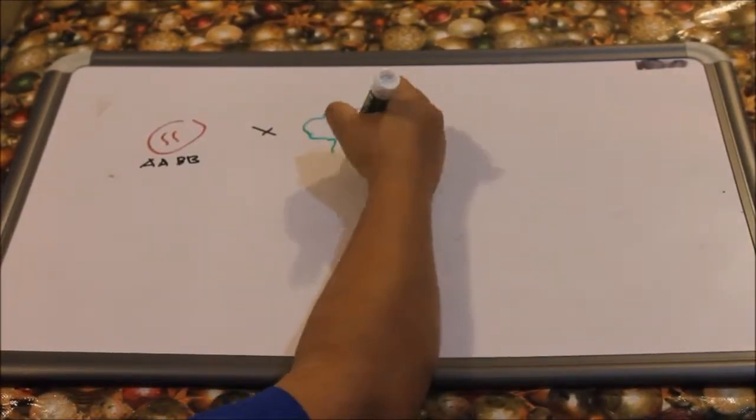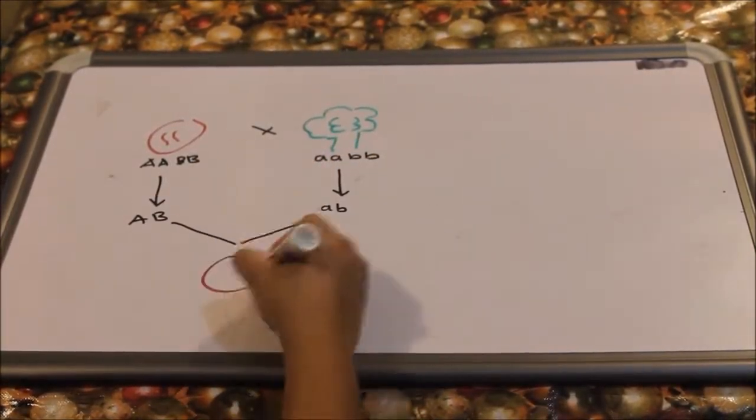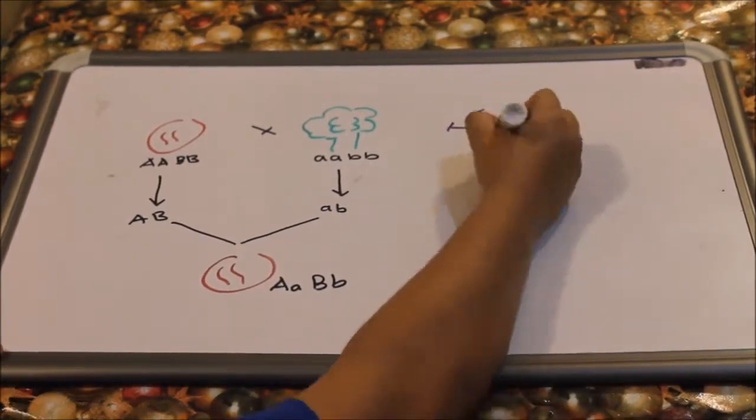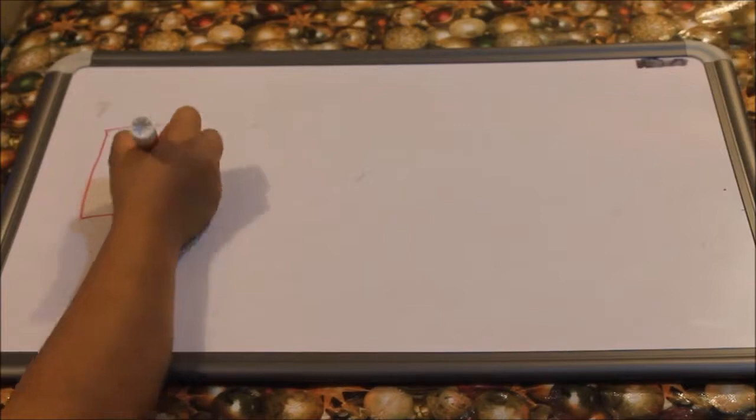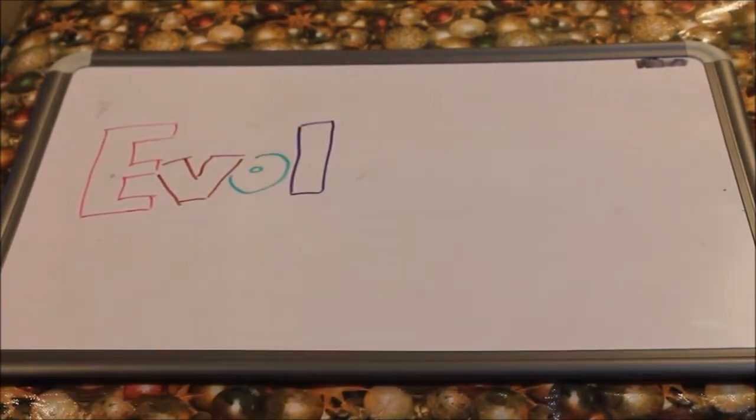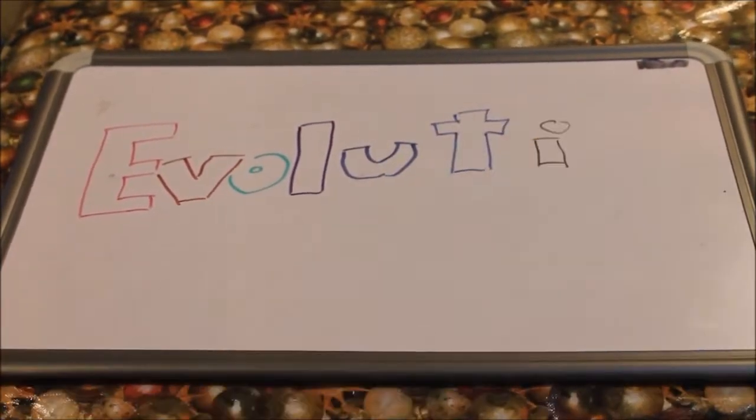To start talking about biomimetics, we need to take a look to the ideas of Darwin and Mendel, who talked about heredity and natural selection. If we combine both ideas, we obtain as a result, evolution.